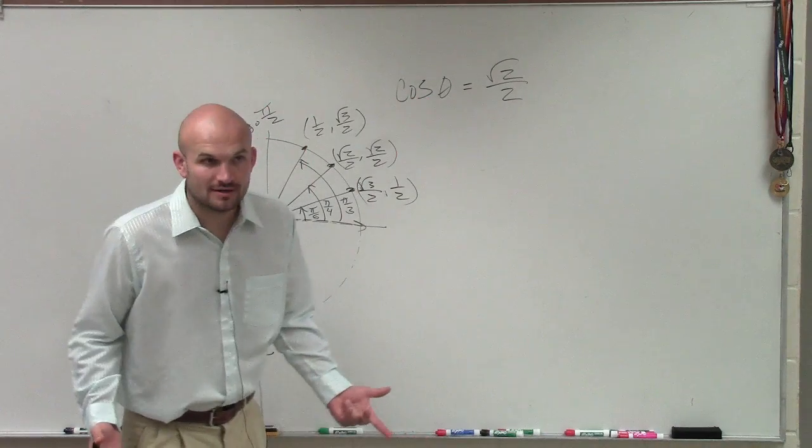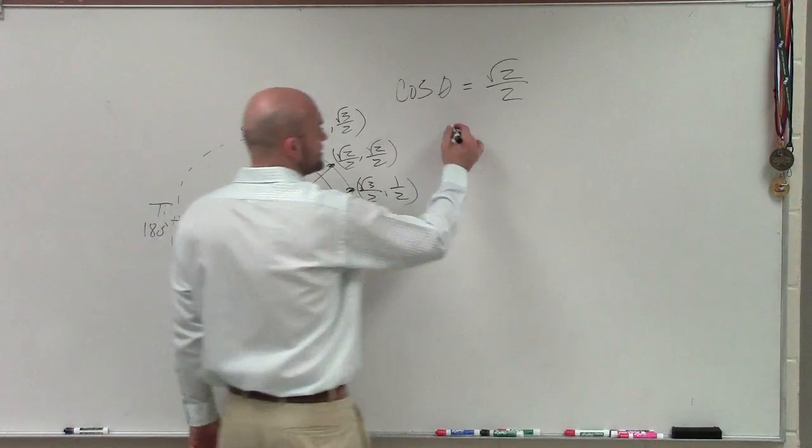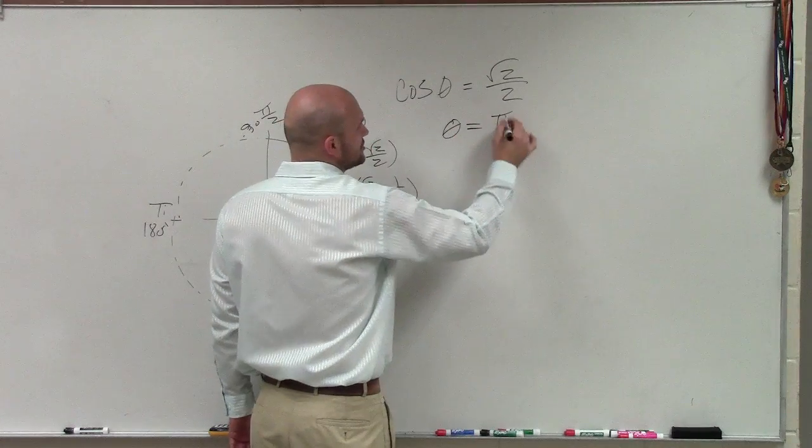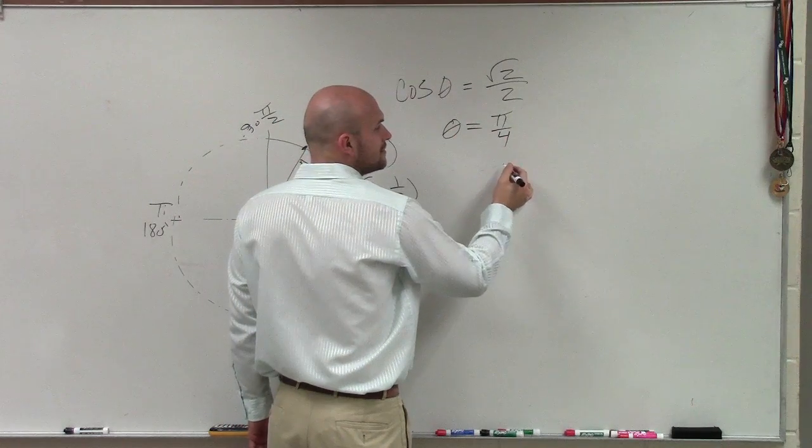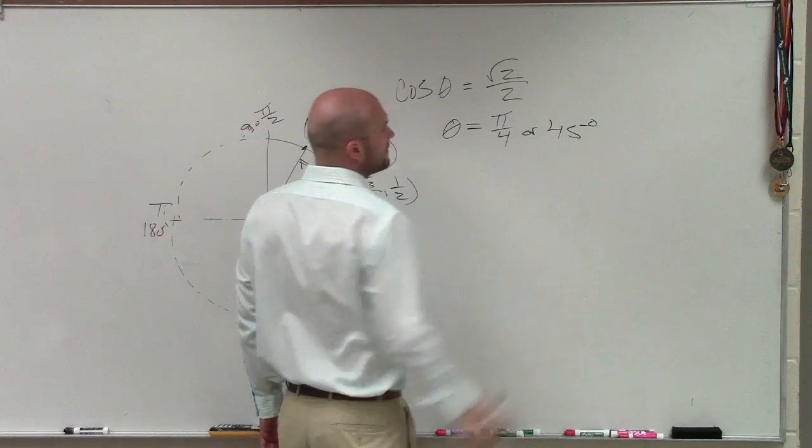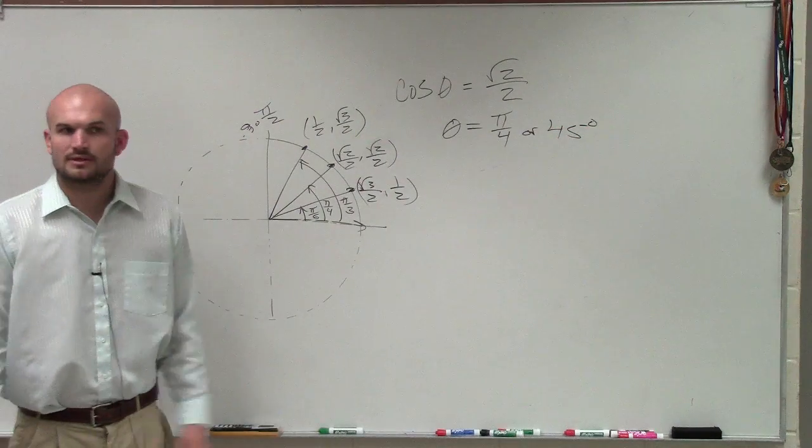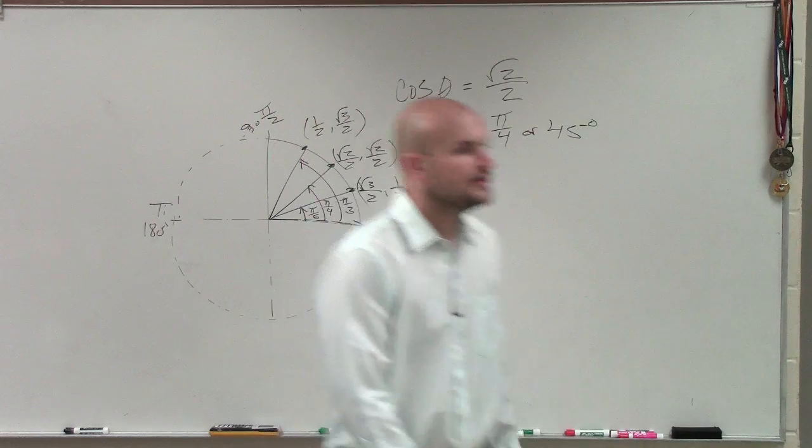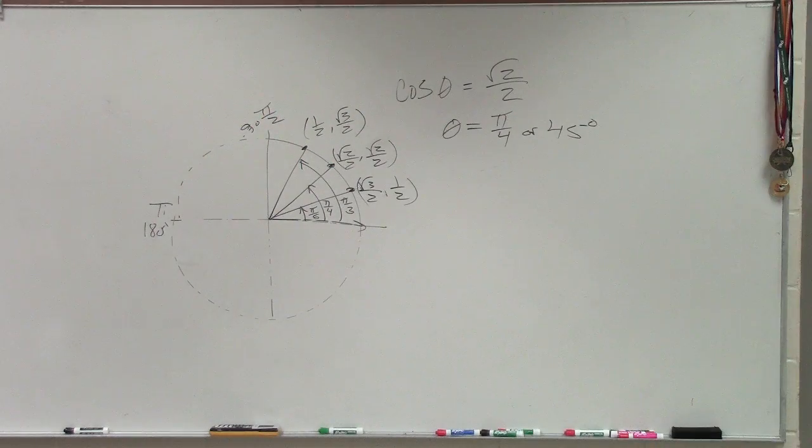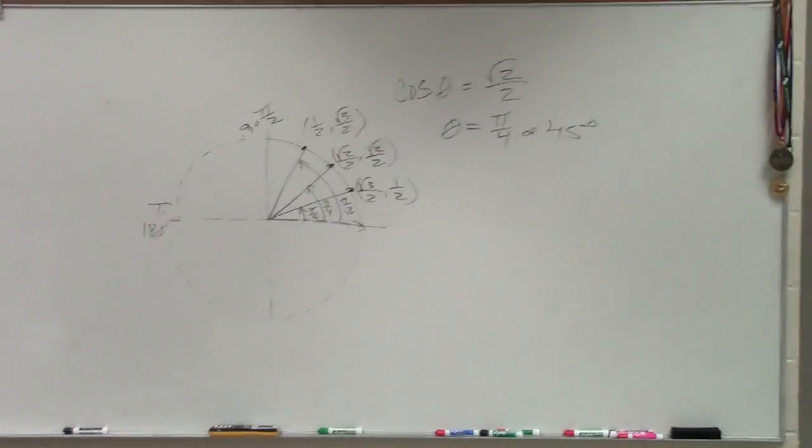Pi over 4. So the answer, theta is equal to pi over 4, or that's the same thing as 45 degrees. Nice. That's it. Done. OK? Now, there's one thing I want you guys to be aware of. We're not going to talk about it.